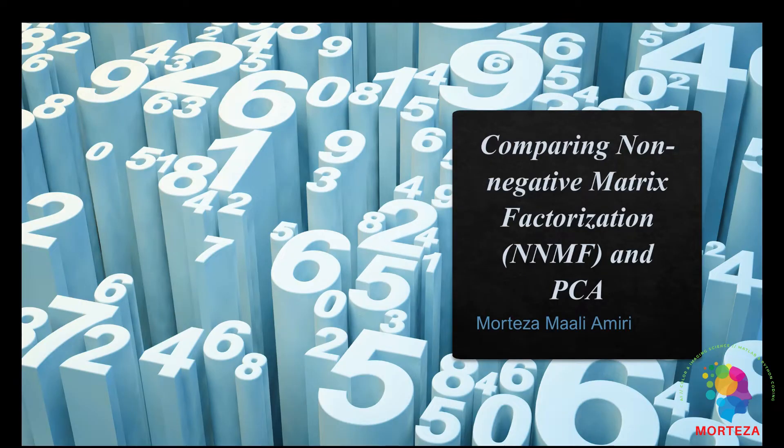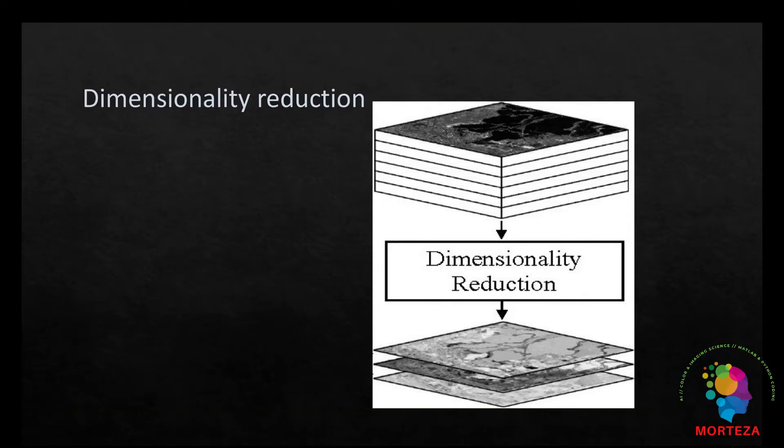Okay, let's compare non-negative matrix factorization or NNMF with PCA. Both PCA and NNMF are widely used for dimensionality reduction purposes in which a few of the basis functions extracted from the data set using either method are used to represent the whole data set at a smaller number of dimensions.